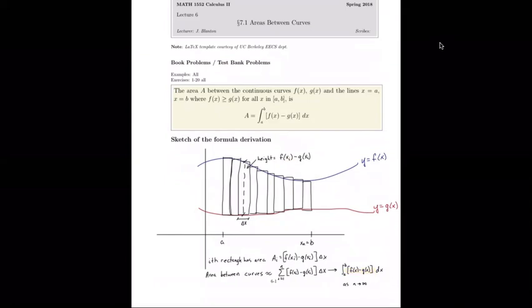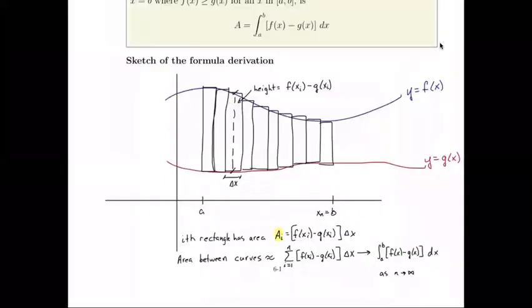The area of the i-th rectangle is the height times the width delta x. If we sum up every i-th area from 1 to n, we get an approximation — the sum of all these rectangles approximating the area between the curves. Taking the limit as n goes to infinity gives the definite integral from a to b of f(x) minus g(x) dx. That defines the area between two curves.